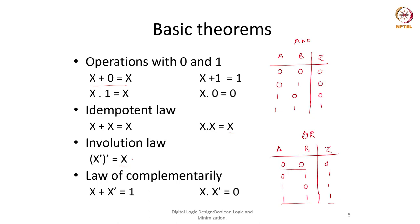The law of complementarity says that if I OR X with X' (X dash), the output is going to be 1. If X is 0, X' becomes 1, so 0 OR 1 equals 1. Similarly, if X is 1, X' becomes 0, so 1 OR 0 equals 1. And X AND X' equals 0, because if X is 1 then X' is 0, and if X is 0 then X' is 1 — the output is always 0.